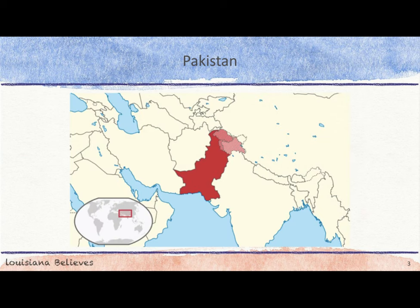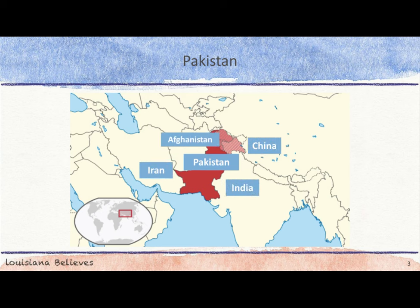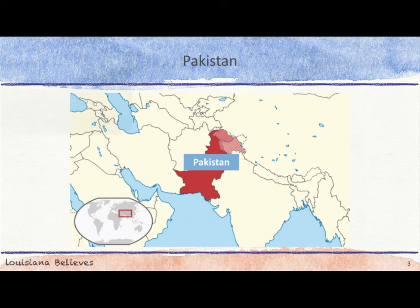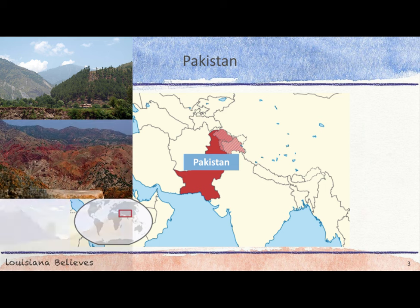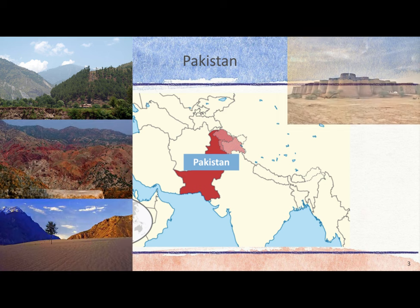Pakistan is a country located in South Asia. It is bordered by Iran, India, China, and Afghanistan. The southern border is the Arabian Sea. Pakistan has a variety of landscapes, including mountain ranges, plateaus, river basins, and deserts.